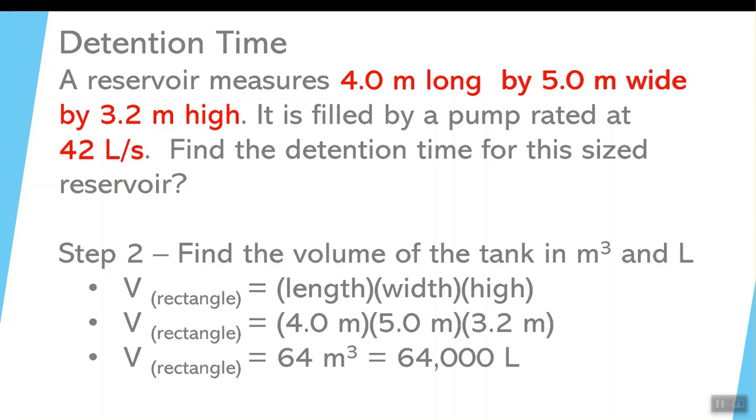You have to make sure you put the units in so that you know when you can stay and when you have to convert. In this case, remember that there's 1,000 liters for every cubic meter. So 64 meters cubed times 1,000 gives you 64,000 liters. Next step.